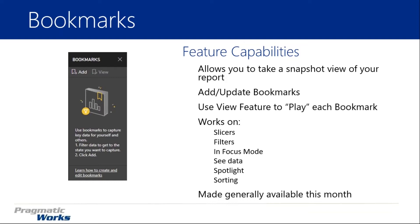If bookmarks are new to you, let me explain them. Bookmarks are the idea of taking a snapshot view of your report. Picture a report you've designed — you can take a snapshot of what it looks like at any point in time, make a change, take another bookmark, and see different versions of how the report looks. You can have as many bookmarks as you want, update them, and even play through them sequentially. Bookmarks can be applied to slicers, filters, focus mode, see data, spotlight, and sorting.